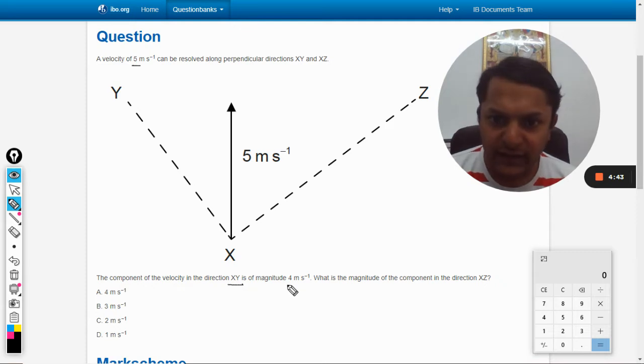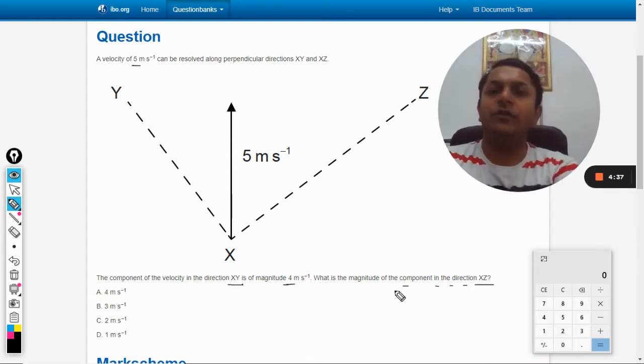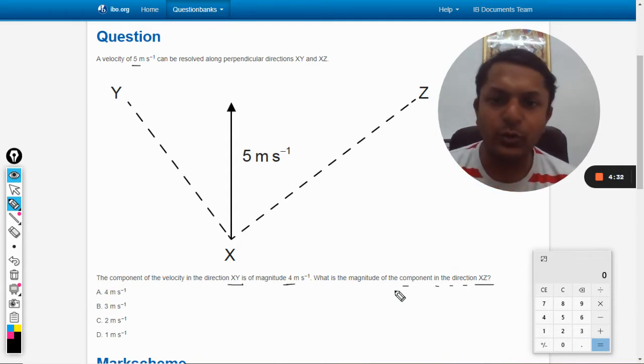The component of the velocity in the direction XY has magnitude 4. What is the magnitude of the component in the direction of XZ? There are two axes which are perpendicular to each other, so this angle is 90 degrees.